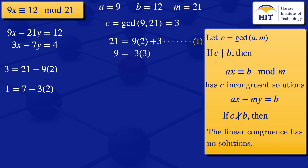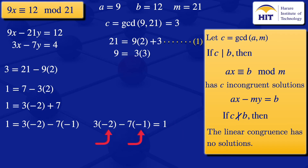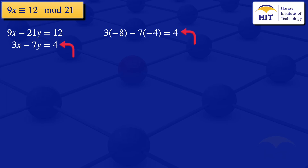Rearranging to match our equation form with a minus 7 term: 1 = 3 × (−2) − 7 × (−1). Rewriting: 3 × (−2) − 7 × (−1) = 1. Now multiply by 4 to match the right-hand side of equation 1 (which has a 4): 3 × (−8) − 7 × (−4) = 4.